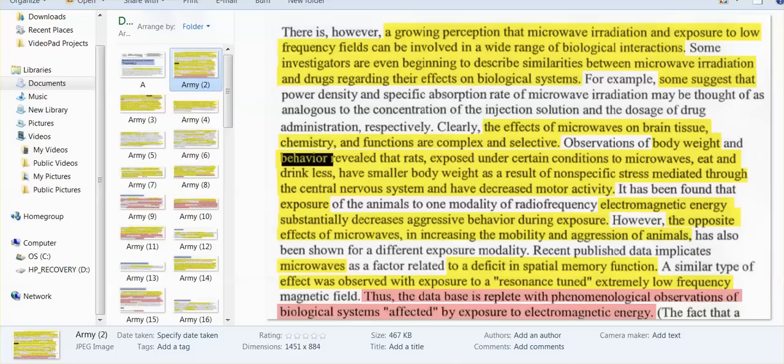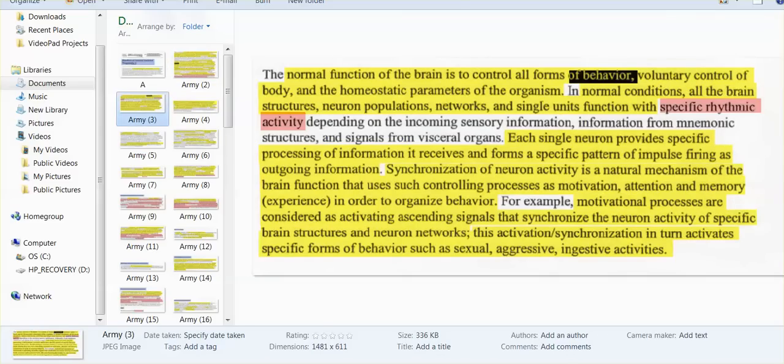And the army found that there's a database that's replete with phenomenological observations of biological systems affected by exposure to electromagnetic energy. Yes, they studied everything. They studied the normal function of the brain and its control, its voluntary control, all forms, control of all forms of behavior, the voluntary control of body, the homeostatic parameters of the organism.